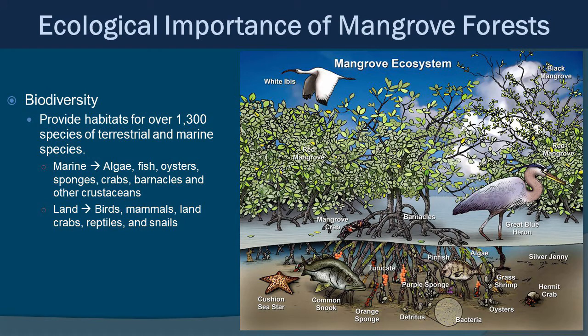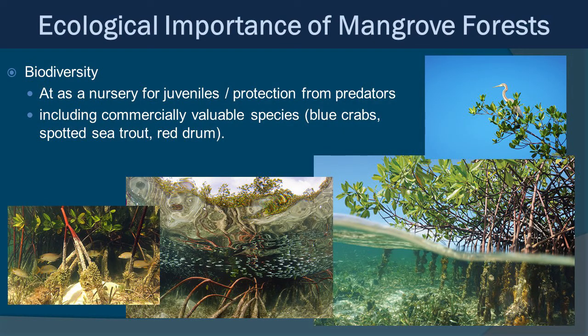In terms of biodiversity, mangroves are crucial. They provide habitat for over 1,300 species of terrestrial and marine species — things like algae, fish, sponges, crabs, barnacles, and other crustaceans under the water, and above the water birds, mammals, land crabs, reptiles, and snails. It's just a bonanza of life. Adding to that, a lot of these animals are juveniles, so mangroves provide a nursery habitat for juveniles to protect them from predators. This includes many commercially valuable species such as blue crabs, spotted sea trout, and red drum.